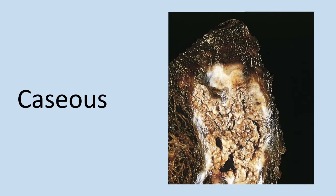The next type of necrosis is caseous necrosis. This is most often seen in tuberculosis and has a yellowy-white, cheesy, friable appearance and texture — that's where it gets its cheese-like association, 'caseous,' from the name. The necrotic area is a collection of fragmented lysed cells and debris contained within an inflammatory border, and this focus of inflammation is known as a granuloma.